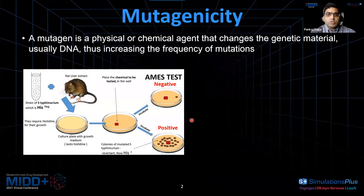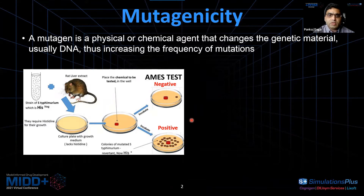Just to give you a brief introduction about mutagenicity: a mutagen is a physical or chemical agent that changes the genetic material. When we talk about genetic material, we are talking about the DNA, and thus it increases the frequency of mutation.